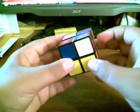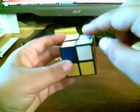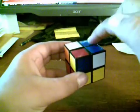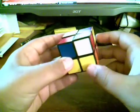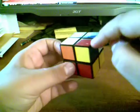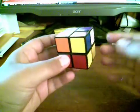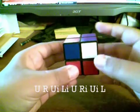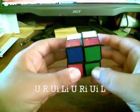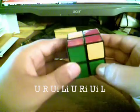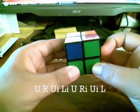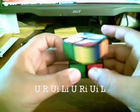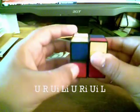So next, we need to have an algorithm that will swap these three corners with each other in a cycle and it will not affect this corner that is permuted correctly. So what the algorithm is: U-R-U-I-L-I-U-R-I-U-I-L.